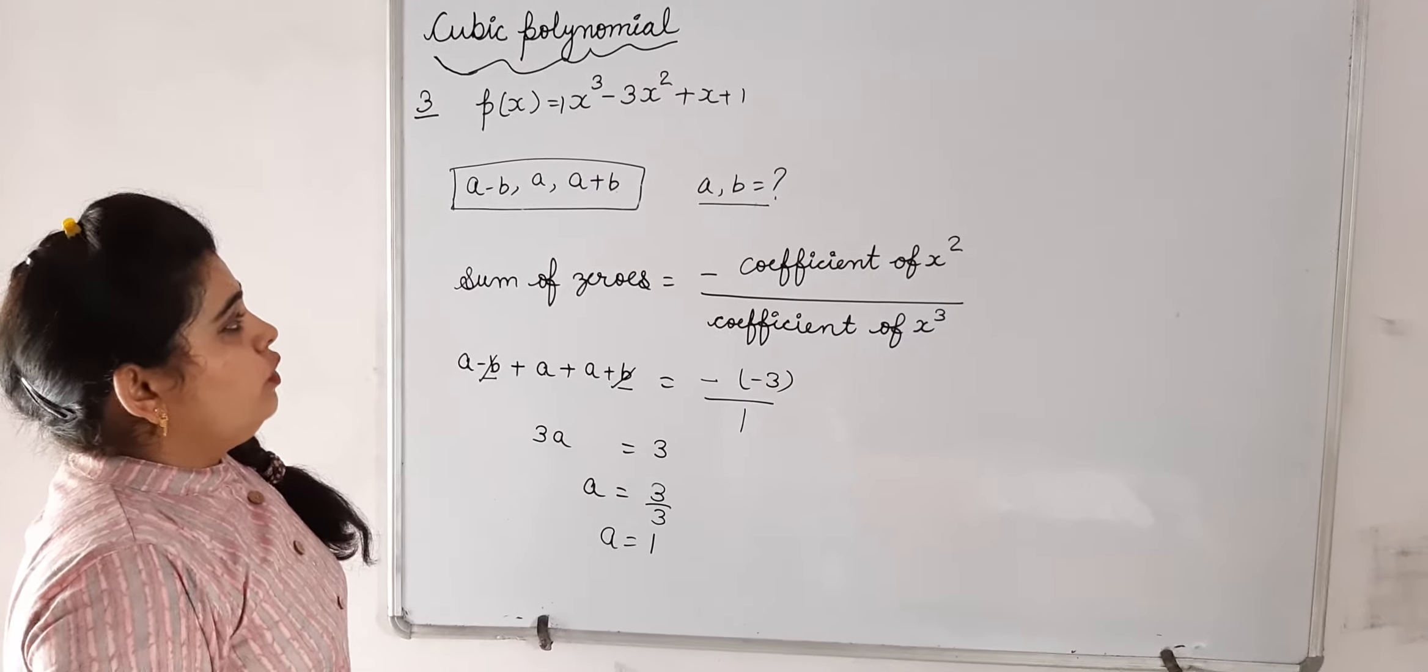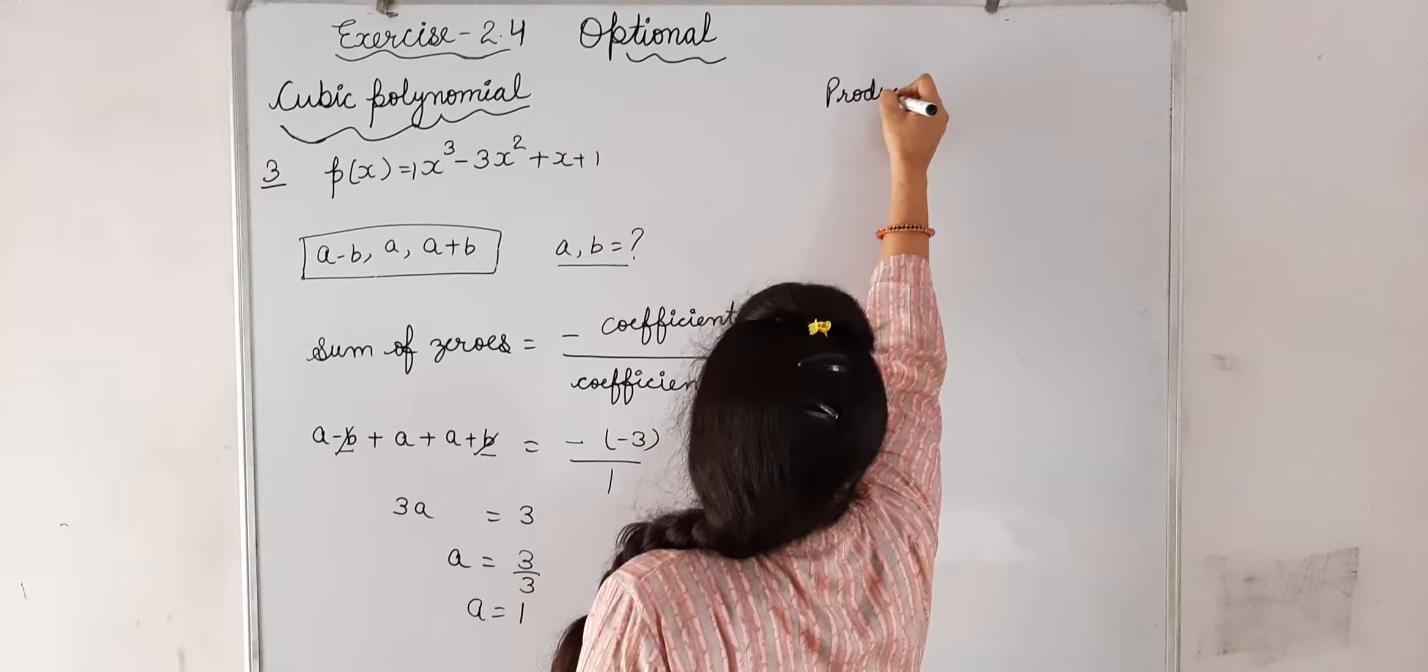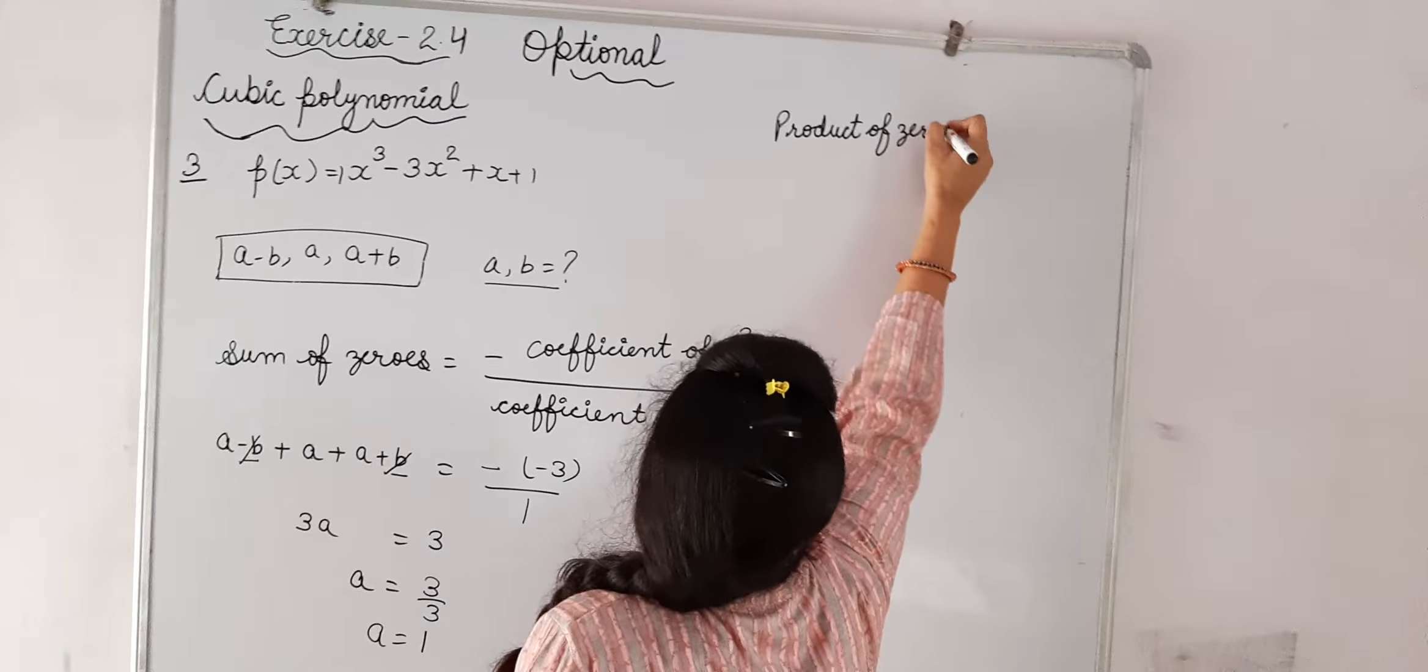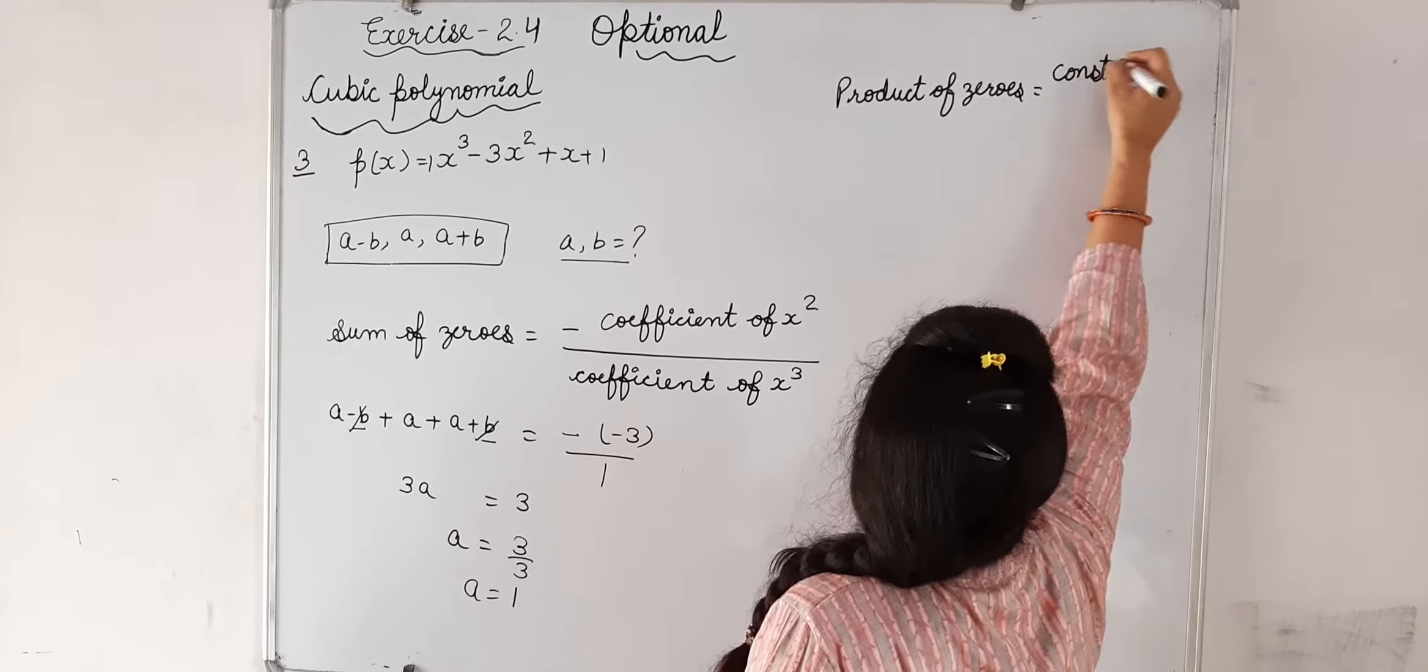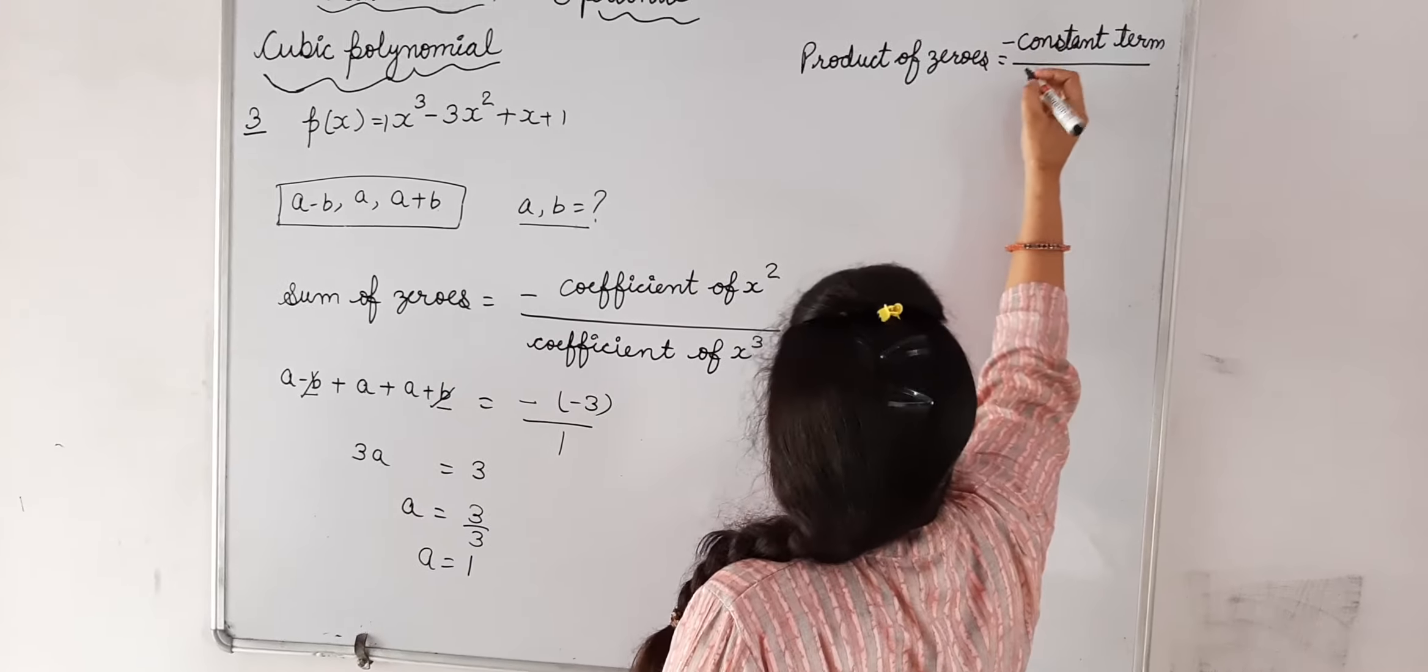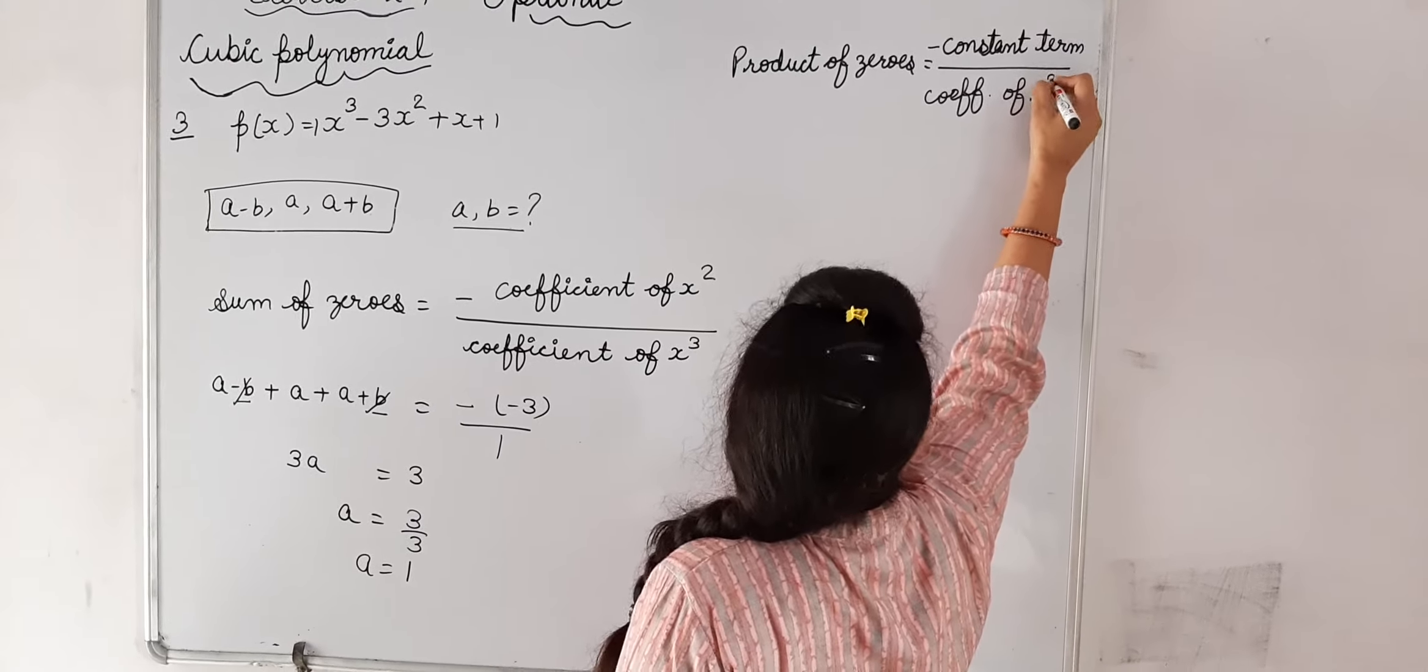for the value of b, we can find the product. The product of zeros is equal to minus the constant term divided by the coefficient of x³. Now,